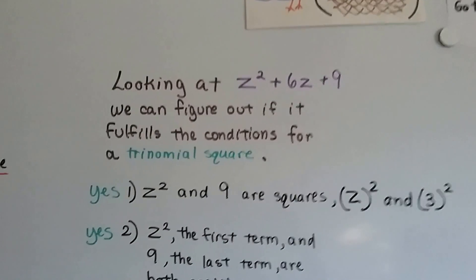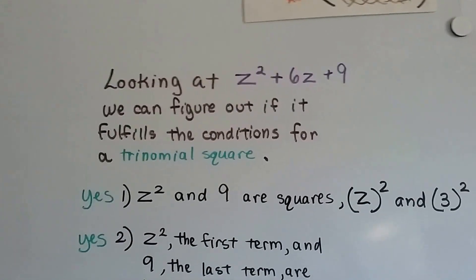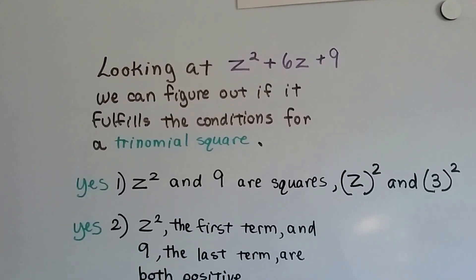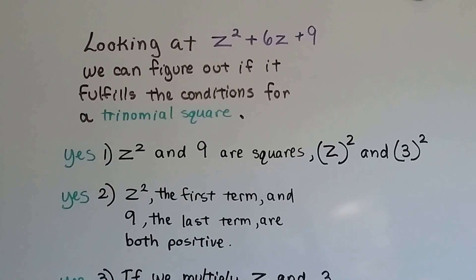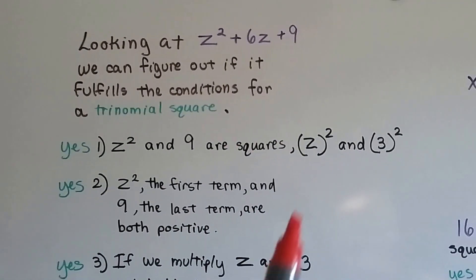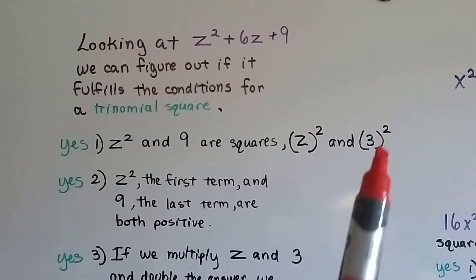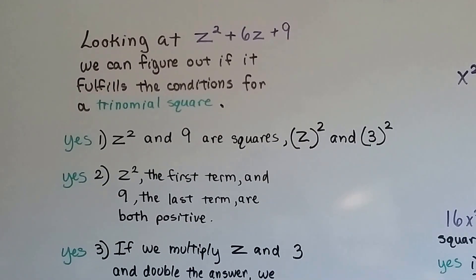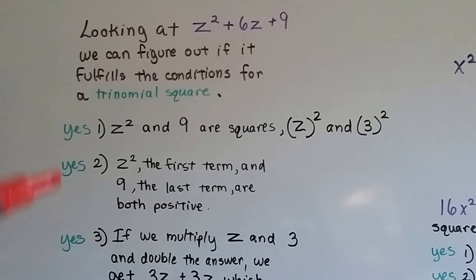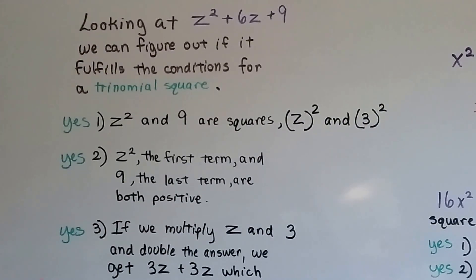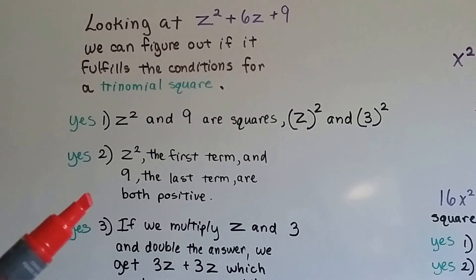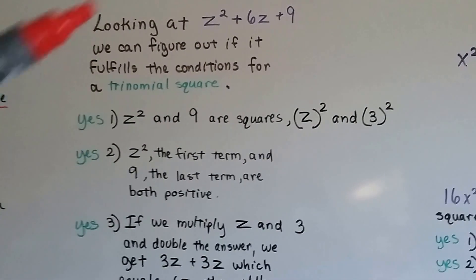So let's take a look at this a little bit deeper. Looking at our trinomial square, we can figure out if it fulfills the conditions of a trinomial square. So z squared and 9 are squares. z to the second power and 3 to the second power make the z squared and the 9. So yes, it fits that condition. z squared, the first term, and 9, the last term, are both positive.